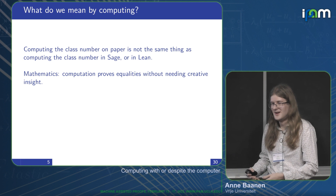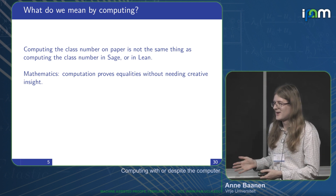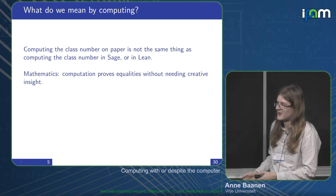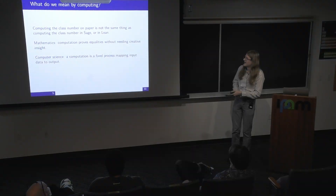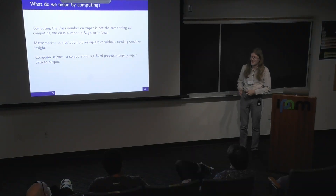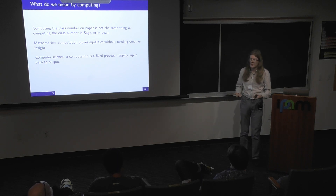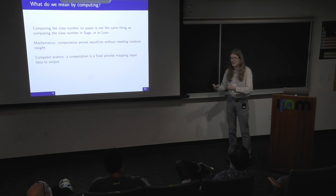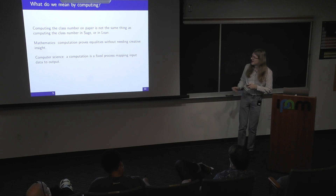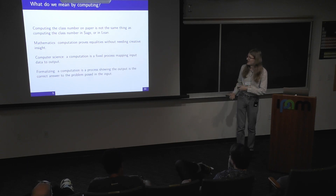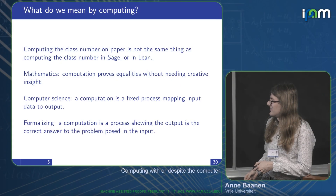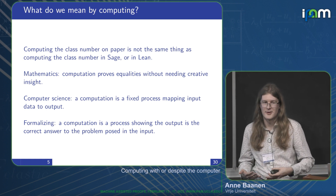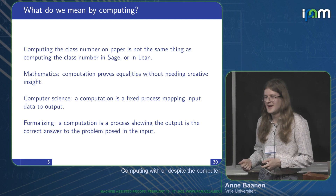If in mathematics I say something holds by computation, I mean we have some equality we can prove without creative insight — just following well-known steps. In computer science you really have a fixed process, an algorithm: you feed it input, it gives output, and there's no real meaning behind the output other than what the process returns. When formalizing, we need both: a fixed algorithmic process and also the reasoning that it gives the correct answer.